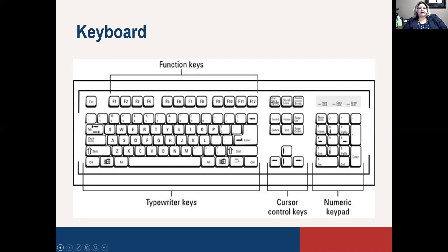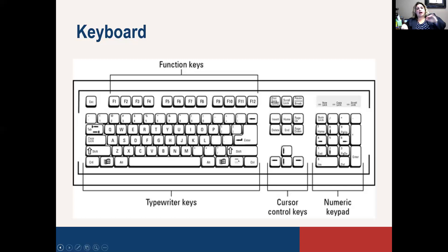With the keyboard, some things to keep in mind: you've got your typewriter keys — if you've used a typewriter that's going to be pretty much the same. Then you've got your function keys at the top — all your F keys. You've got your cursor control keys, which are up, down, and side to side, helpful for navigation and gaming. Then you've got your numeric keypad, which is purely numbers, and the 10-key can come in handy if you're typing a lot of numbers.